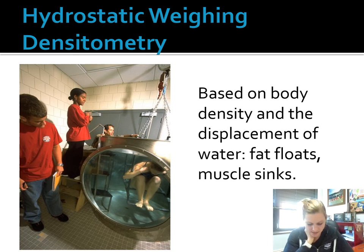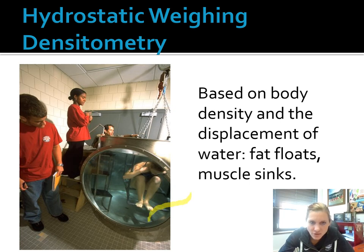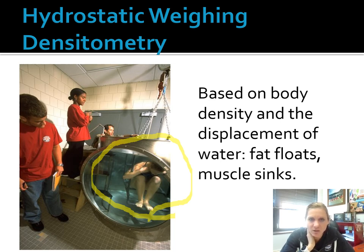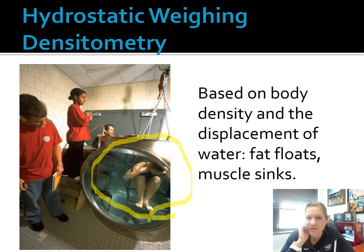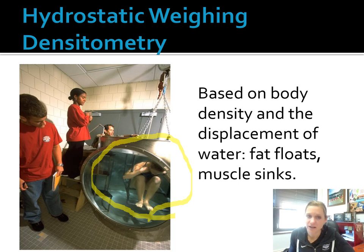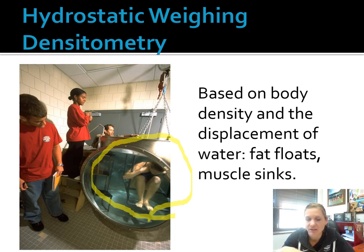Hydrostatic weighing is another method we did not do in class, but it's a pretty valid method for measuring body composition. The subject is in a little tub filled with water — basically it works on the principle of body density in comparison to weight. We're looking at how much water she displaces, which tells us the volume of her body or the body density, in comparison to how much she weighs underwater. She's sitting on a scale, and we look at what her weight is in comparison to how much water she moved or displaced.